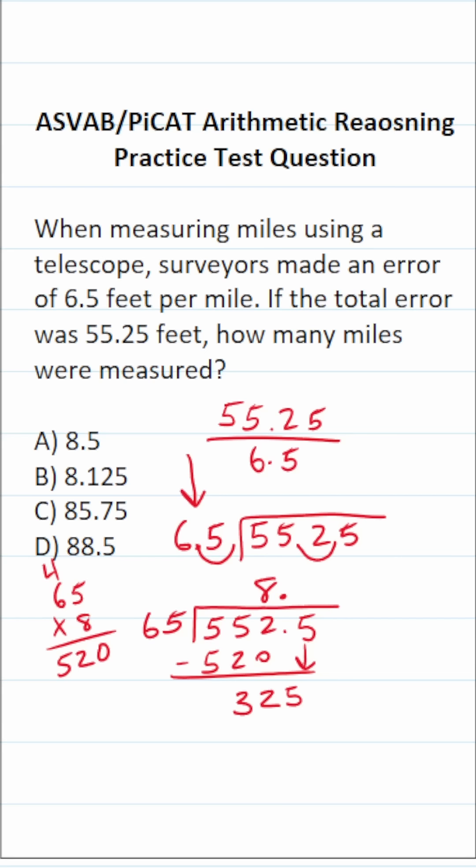Now the question is, how many times does 65 go into 325 without going over? Well, 6 times 5 would be 30, 60 times 5 would be 300. So I'm going to say 65 goes into 325 five times.